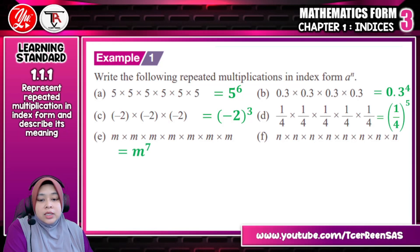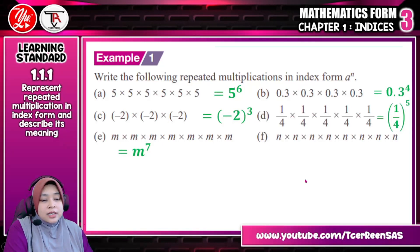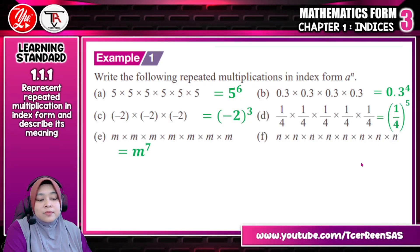For part E, the answer is M to the power of 7, because M is multiplied repeatedly 7 times. For part F, the same as others — you just need to count how many times it repeats: 1, 2, 3, 4, 5, 6, 7, 8. So 8 times means the answer is N to the power of 8.